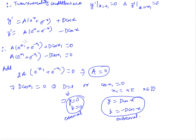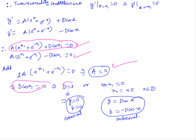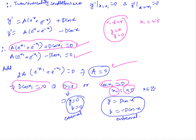Since the right boundary is x = x₁ (a plane with no explicit y or z), ∂ψ/∂y = 0 and ∂ψ/∂z = 0, so the transversality conditions reduce to f_{y'} = 0 and f_{z'} = 0 at x = x₁, giving y'(x₁) = 0 and z'(x₁) = 0. Using y'(x₁) = 0 and z'(x₁) = 0 and adding yields a = 0, which then gives d cos(x₁) = 0. So either d = 0 (giving y = 0, z = 0) or cos(x₁) = 0 (i.e., x₁ = nπ/2), in which case the extremal is y = d cos x, z = −d cos x for arbitrary real d.